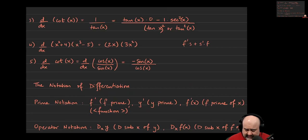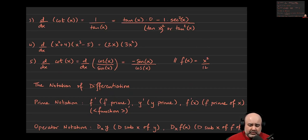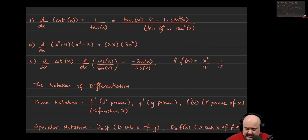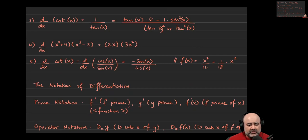A side note: if your function looks like x squared over 12, could you use the quotient rule on it? Absolutely — there's nothing preventing you. x squared is a function, 12 is a constant function, so it's a ratio of functions and you can use the quotient rule. However, it's infinitely simpler to rewrite the problem as one-twelfth times x squared and then just use the power rule. Keep the one-twelfth, find the derivative of x squared, get 2x, multiply by one-twelfth, and you have your answer.